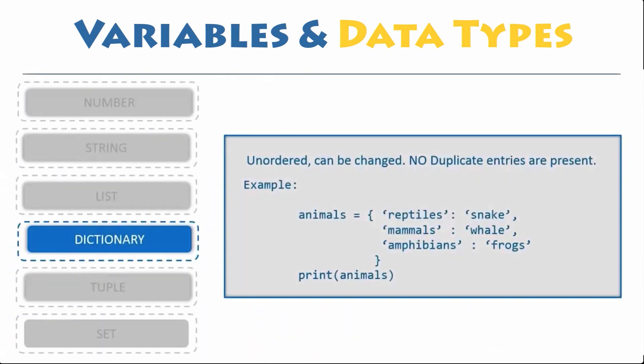Dictionaries. Dictionary in Python is an unordered and indexed collection of values used to store data. Unlike other data types that hold only single value as an element, dictionary holds key value pair.